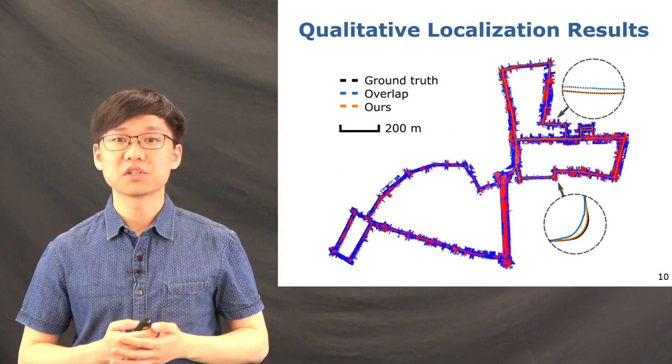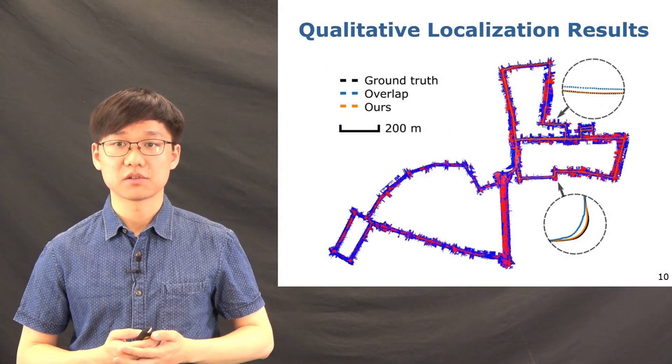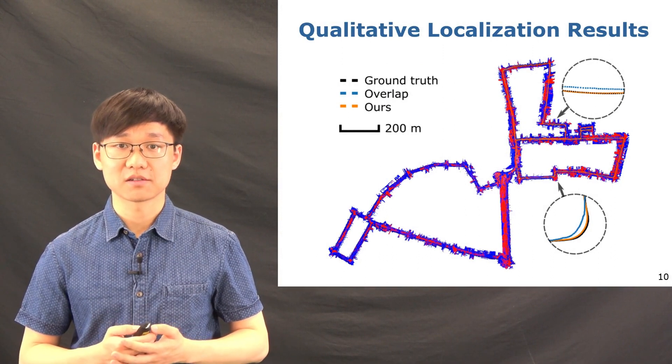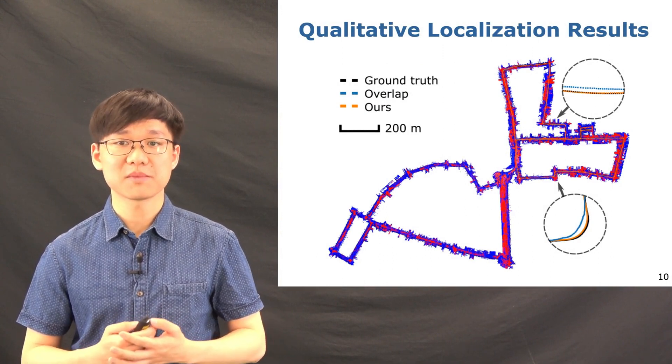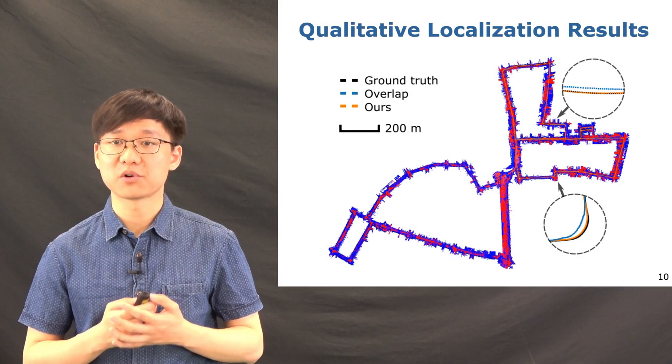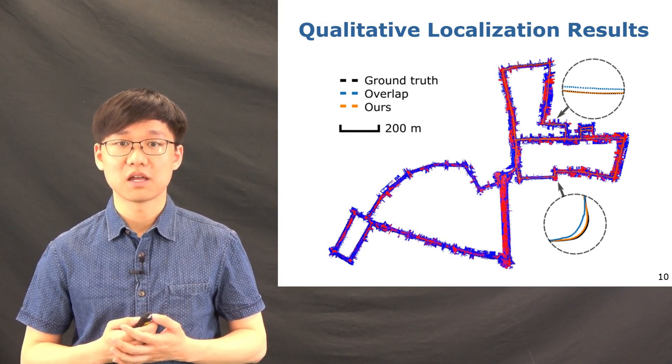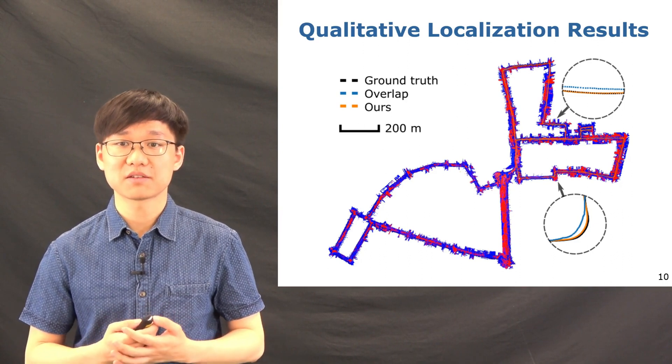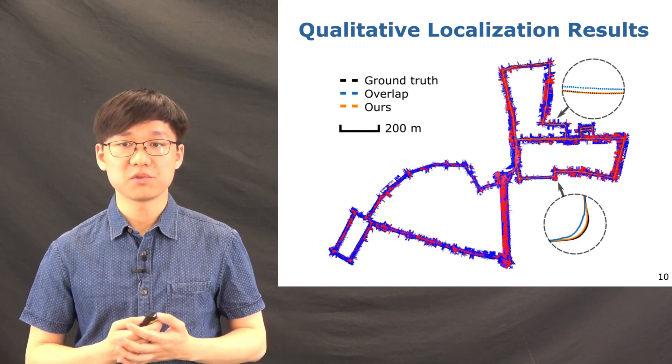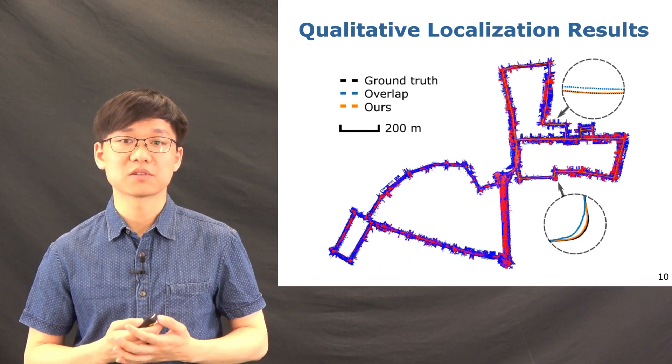Here we show the trajectory of the localization result, tested on the IPB-Car dataset. The result illustrates that the proposed methods localize well in the pre-built mesh maps, using only LiDAR data. And comparing to the baseline methods, our new range image based methods track the pose more accurately.